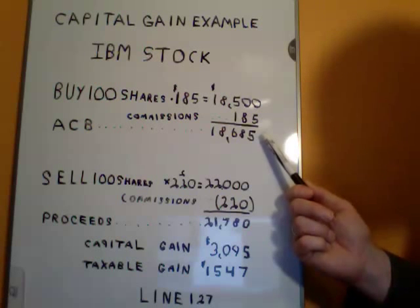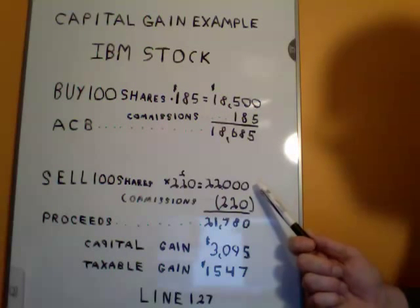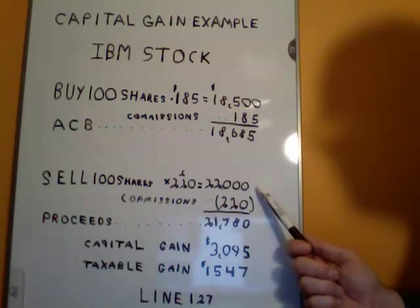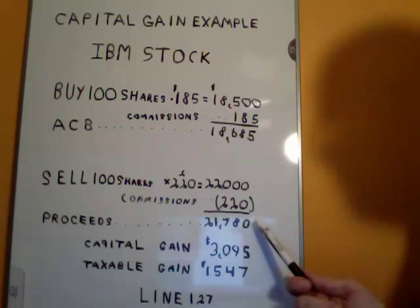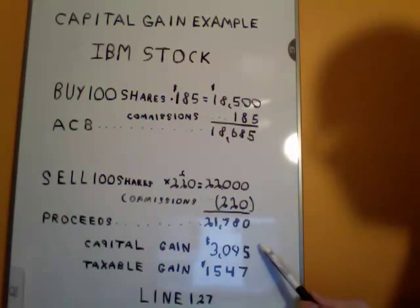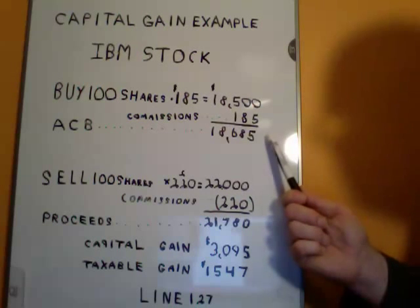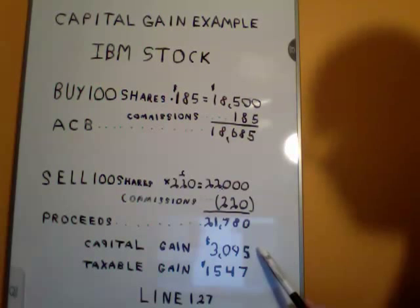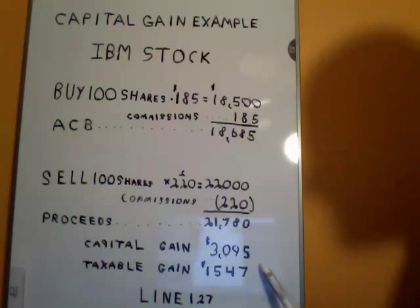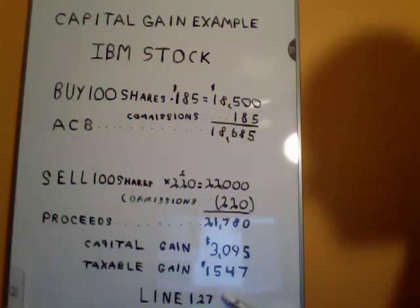Say for this example I also sold the same shares in the same calendar year. I sold my 100 shares for $220 a share, which equals $22,000. I incurred 1% of commissions, which is $220, giving me net proceeds of disposition on this transaction of $21,780. Then I determine the capital gain, which is $21,780 less $18,685, giving me a capital gain of $3,095. The taxable portion of this capital gain is only $1,547. If I didn't have any net capital losses carried forward to utilize against this amount, I would be recording this amount on line 127 of my T1 General Income Tax Return.